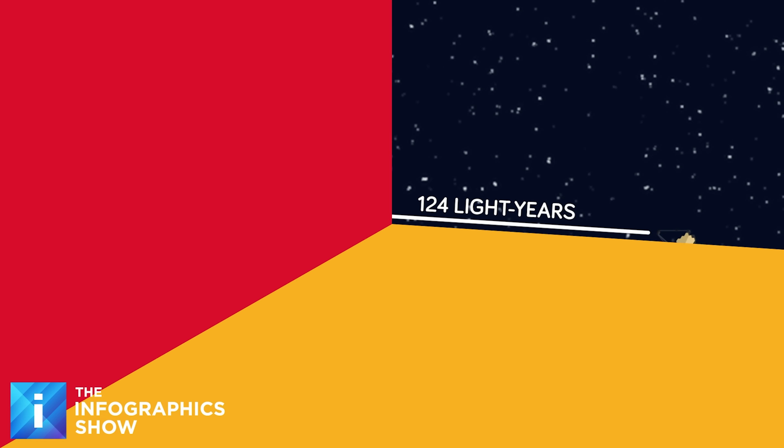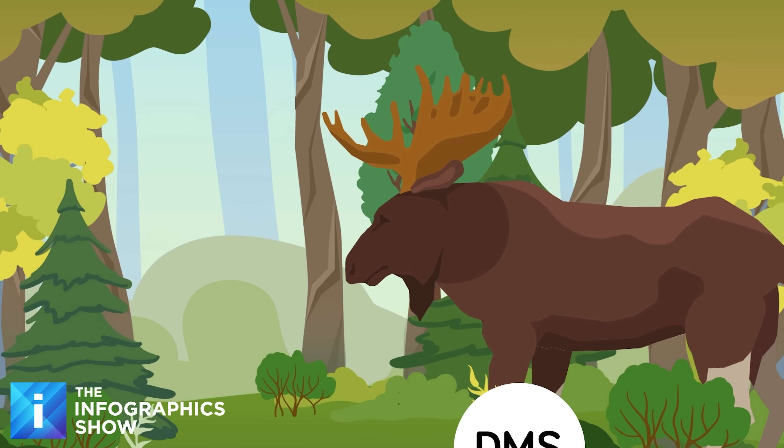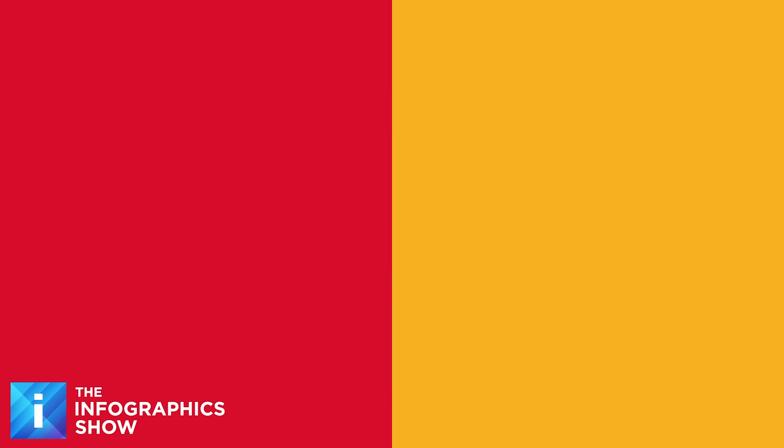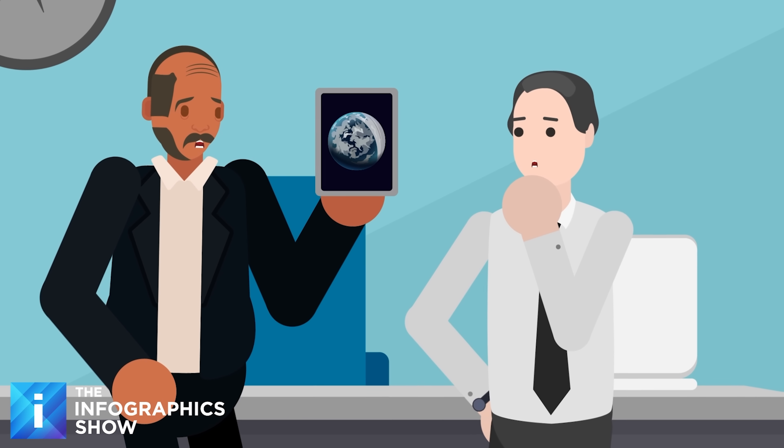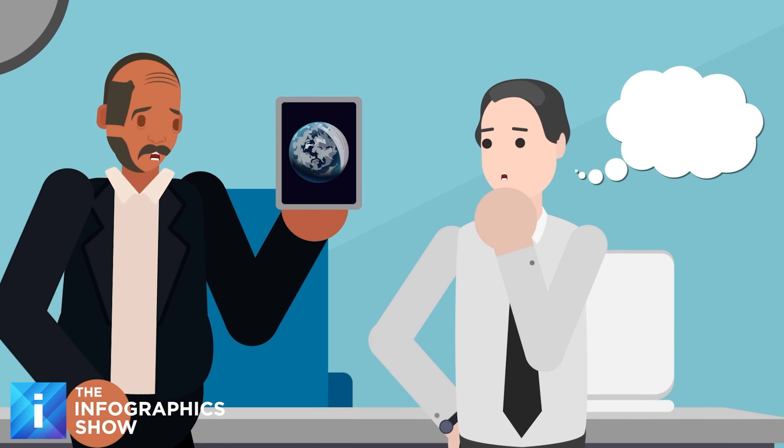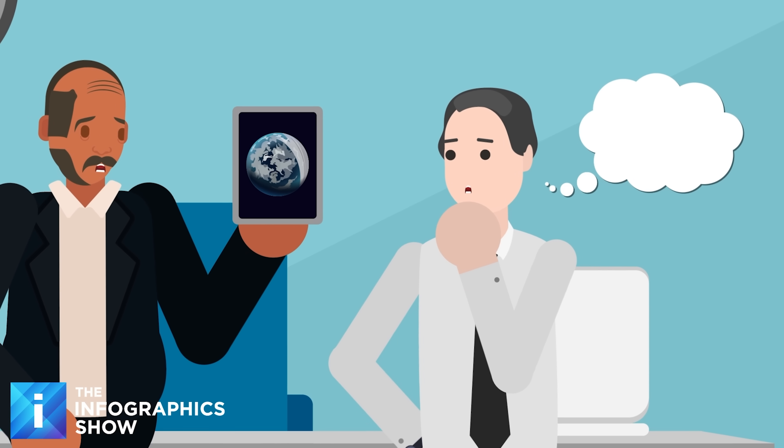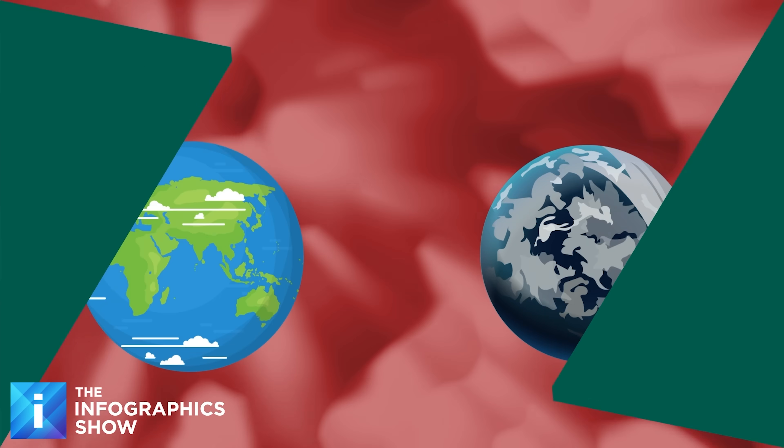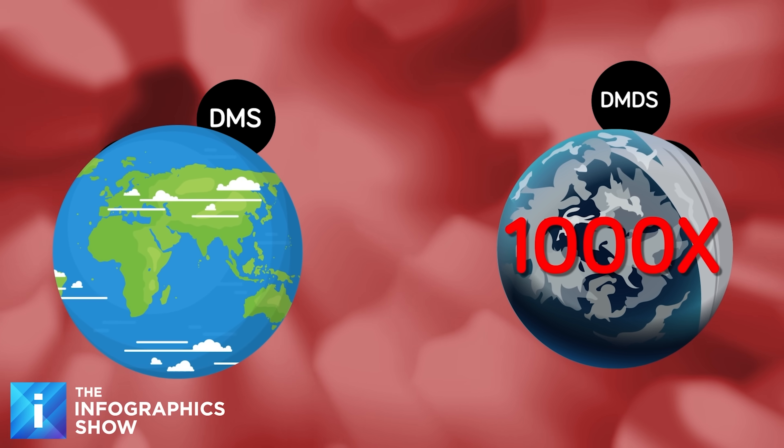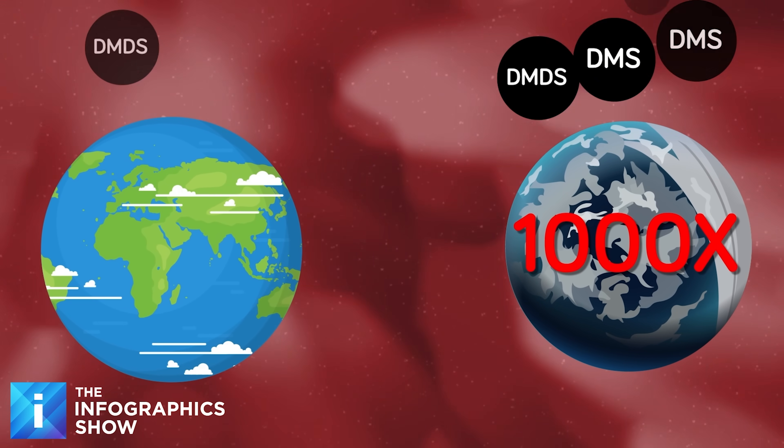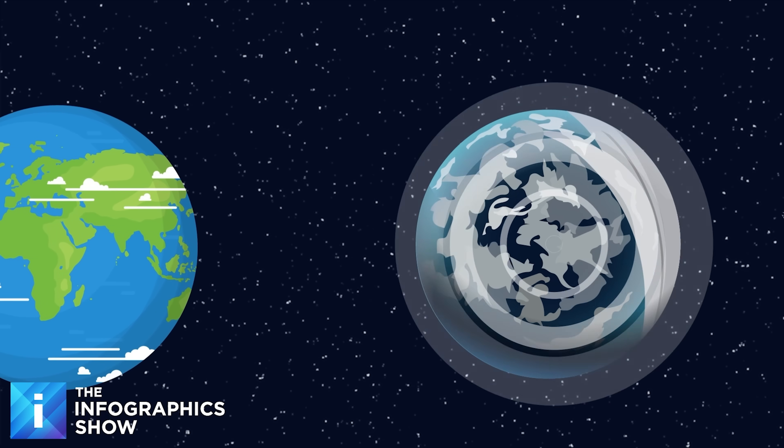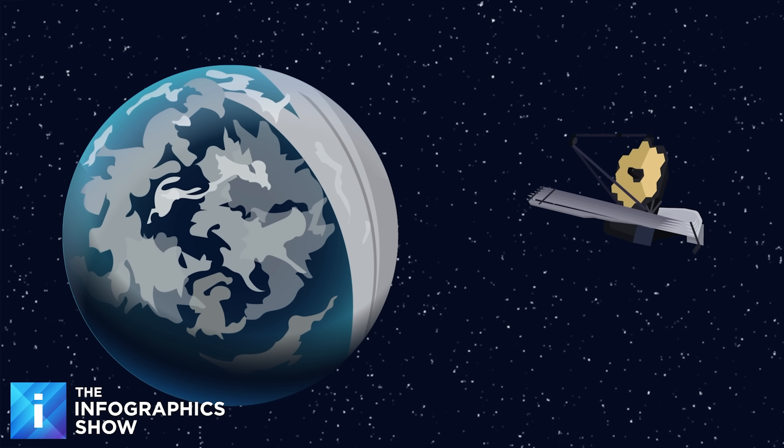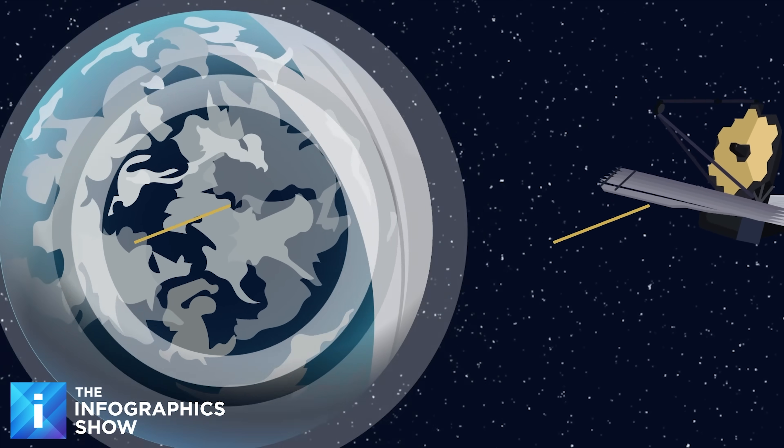But here is why these compounds really matter. They are considered only to exist in the presence of life. The presence of either of these compounds alone would have been enough to raise eyebrows, but what truly stunned the astronomy world was the quantity. These molecules don't last long, they break down quickly. Yet, they were found in concentrations thousands of times higher than on Earth. That means that they were being replenished frequently, raising the prospect that there isn't just life on this planet, but there might be a lot of it.